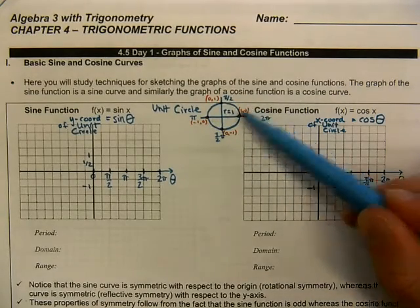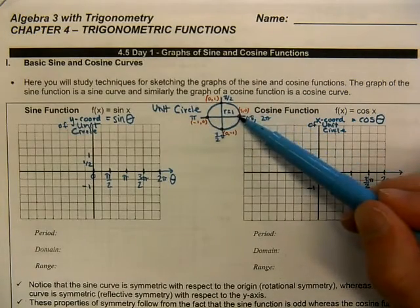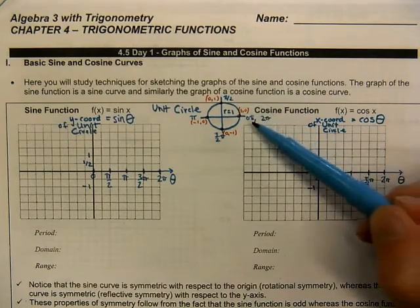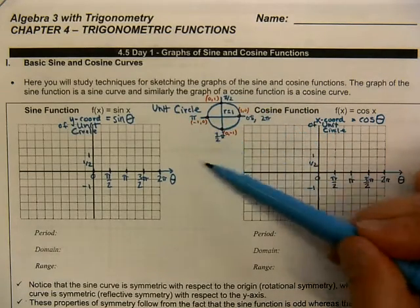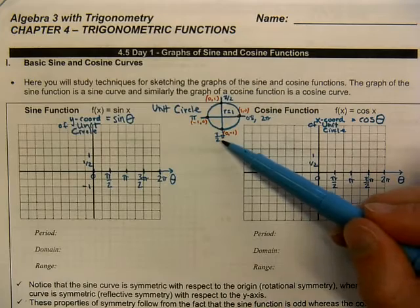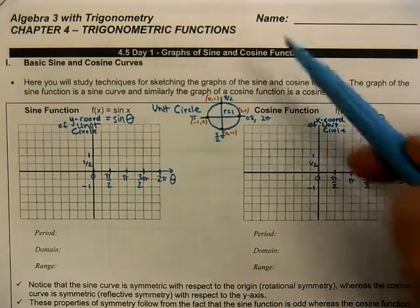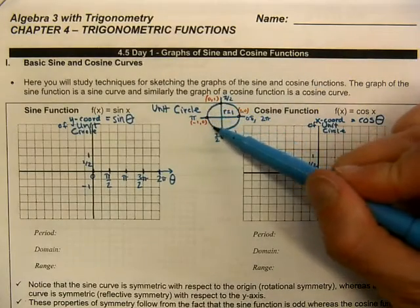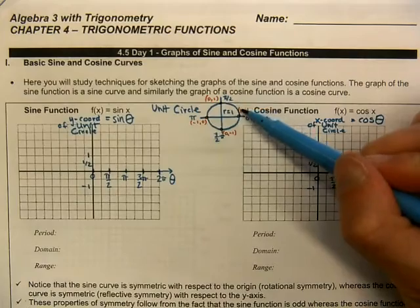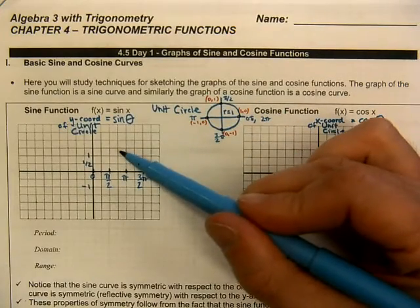Remember, a unit circle has a radius of one, so the point on the far right is (1, 0) — that's at zero. At the top we have π/2, on the left is π, and at the bottom is 3π/2, and we complete the rotation back to where we started at 2π. We're just jumping over the other angles we've learned, using only these critical values to plot those critical points.